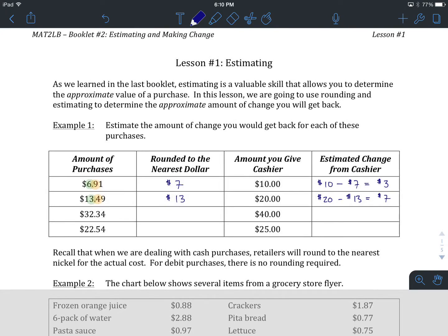So there's a number of things at play here. First, we round the amount of our purchase to the nearest dollar. And then we subtract our estimated amount of purchase from whatever we give the cashier. So at this point, I'd like you to hit pause. I'd like you to try the next one on your own. When you've got it, come back, and we'll see how you did.